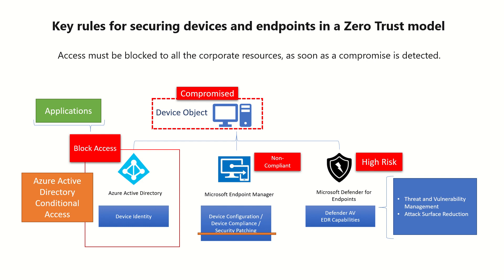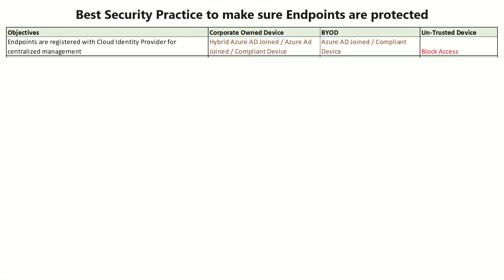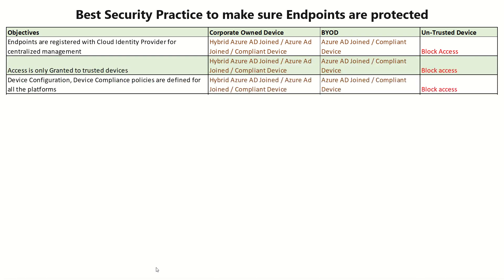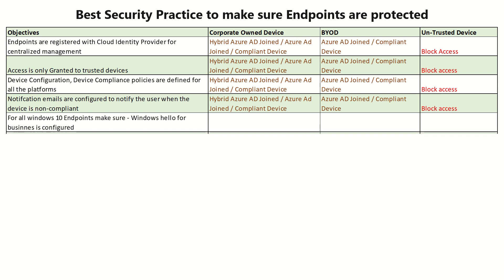Now let's talk about best security practices for every enterprise to ensure all endpoints are protected. First, make sure all endpoints are registered with the cloud identity provider so you have centralized identity and access is blocked on untrusted devices. Access should only be granted on trusted devices, and device configuration and compliance policies should be defined for all platforms. If a device is non-compliant, notify the user with notification settings in Endpoint Manager before blocking or retiring the device.